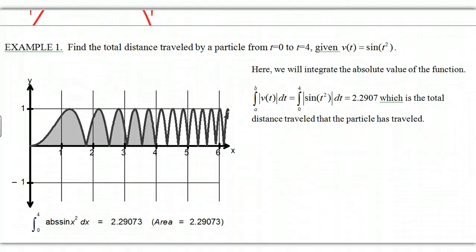Now, if I do an example here. Find the total distance traveled by a particle from 0 to 4, given v(t) = sin(t²). Well, I don't know the antiderivative of this one. Maybe you can go to Wolfram and find it, but I don't know how to do it offhand. And so what I can do is just use my calculator. From a to b, the absolute value of the velocity, I have this function all set up, and I can do it with my calculator.